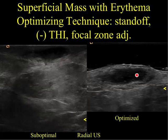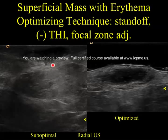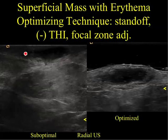Here's an example of a superficial mass with erythema that is not optimally imaged on the left, but we've improved the image to the right. On the left-hand image, we're using tissue harmonic imaging and the focal zone is down in the far field, but what we want to image is higher up. To make this image more diagnostic, let's start by putting a standoff pad on and bringing the focal zone up to the skin line, so now our focal zone is at the posterior aspect of the abnormality.